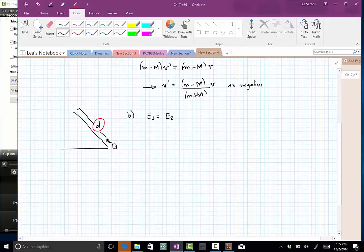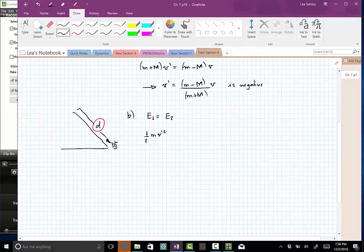Conservation of mechanical energy. The initial is equal to the final. Initially, this little box has only kinetic energy, so it's one-half of m V prime squared, the V prime that we found above here, and it has no potential energy. It's at this level here, and I'm saying that this point is just zero.